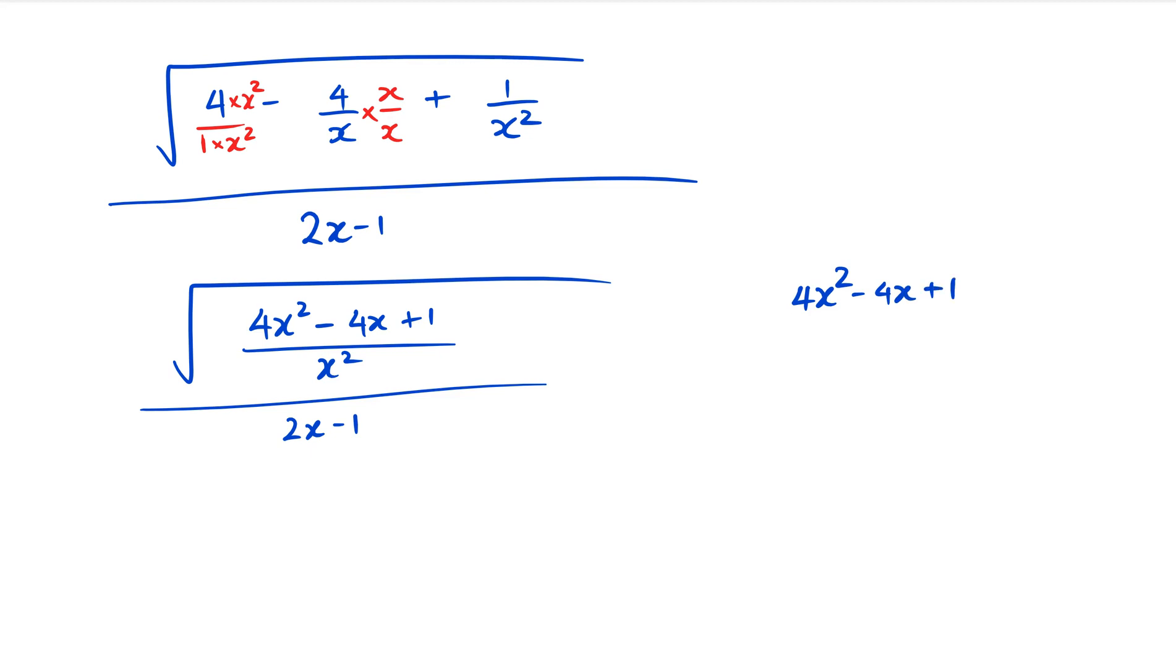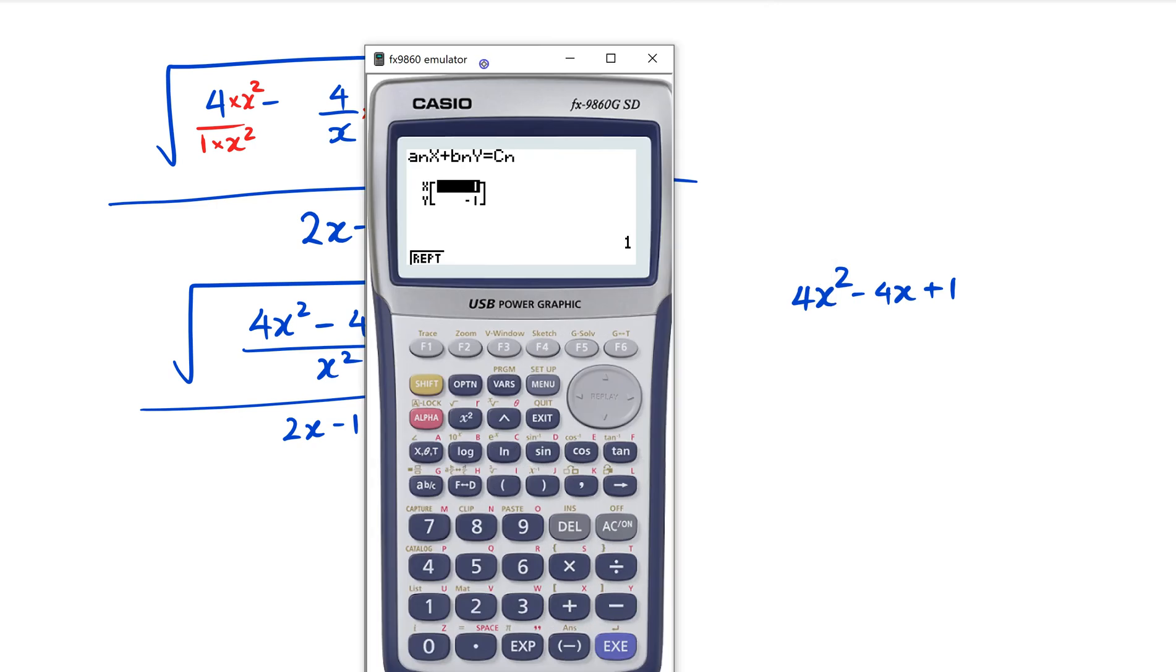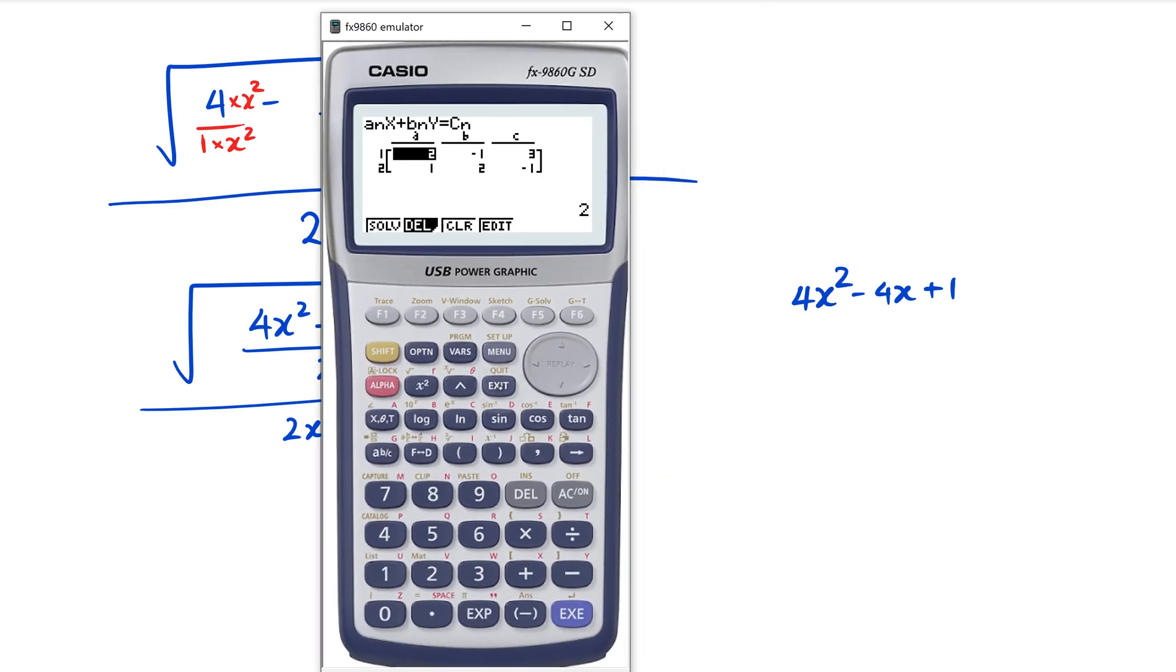This is one of the little tricks that I use, which is going backwards going into polynomial. I was pressing the wrong button there, so we've got 4, minus 4, and 1.